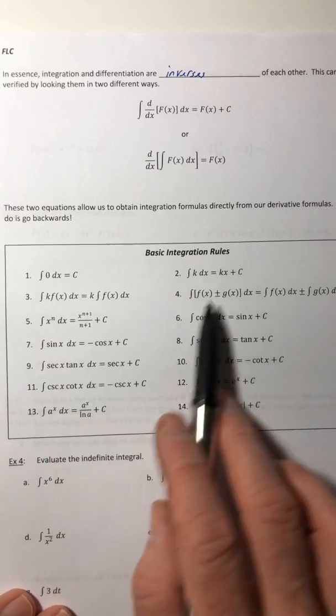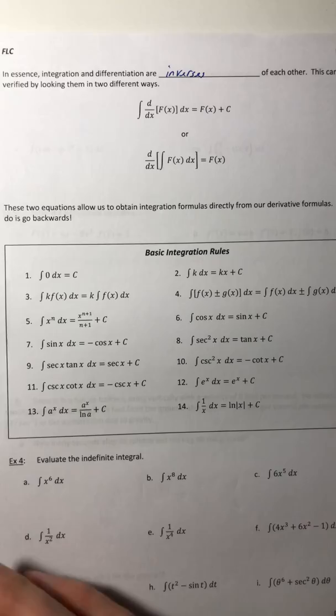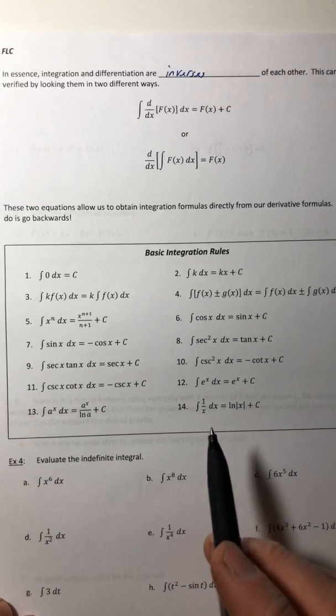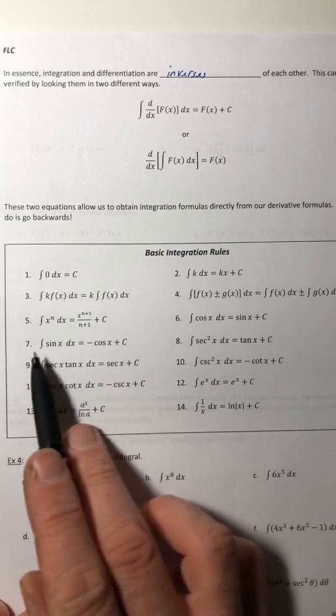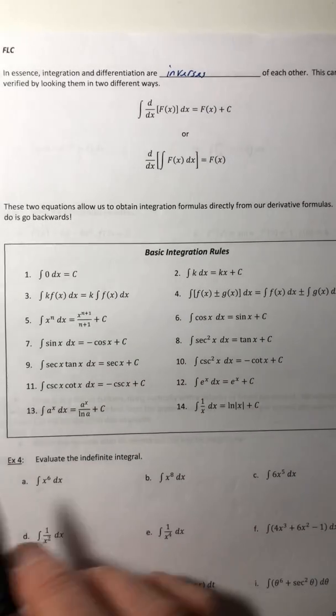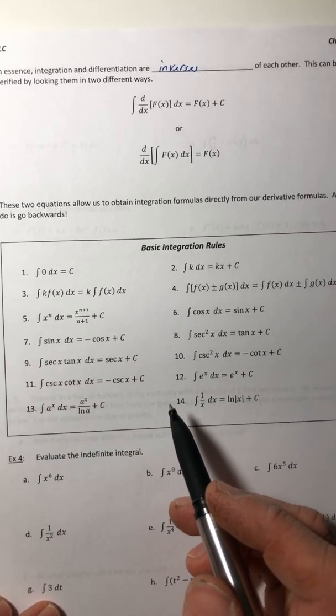So in this box, what we have are just a bunch of basic integration rules from just everything that we've done before. So we're just working our way backwards. So I'll leave it to you guys to kind of take a look at this. The ones I will highlight are some that seem to be commonly missed. Not because they're hard, it's just because people leave things out.